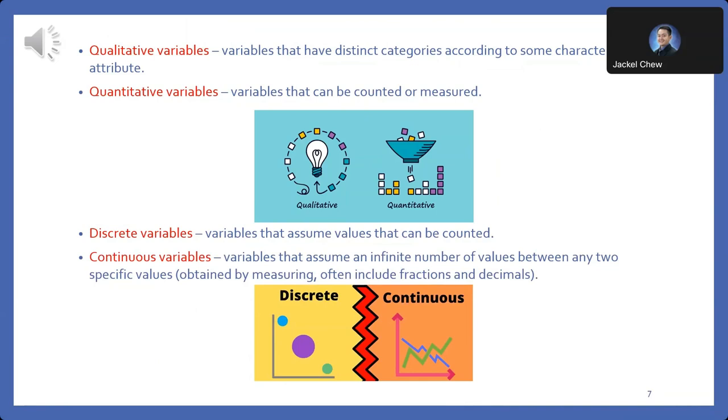Quantitative variables: unlike qualitative variables, quantitative variables are countable and can be measured or assigned numerical values. These variables provide quantitative data that can be analyzed using statistical methods. For example, age, salary level, height and weight.